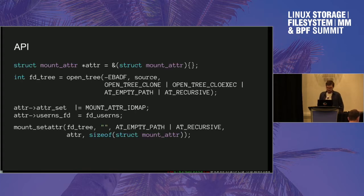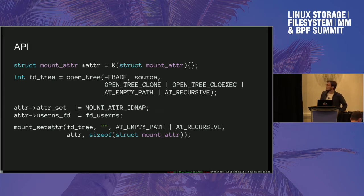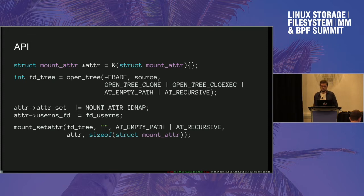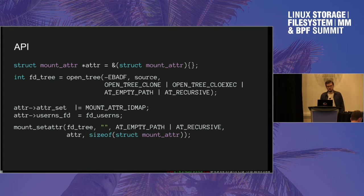The API for this is based on the mount_setattr system call, which is already fairly widely used. It allows you to change various mount attributes — not just the ID mapping used for a given mount, but also things like read-only, read-write, and so on.